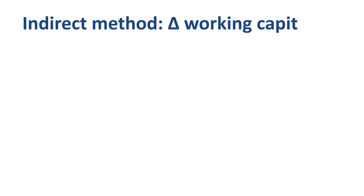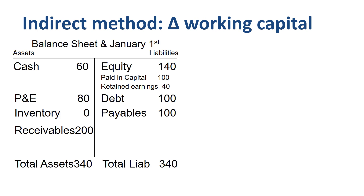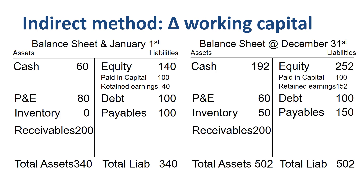The next step in using the indirect method is to review the opening balance sheet of the year versus the closing balance sheet of the year. More specifically, you calculate the deltas in working capital — the increases or decreases. If inventory goes up, then cash goes down. This is called a use of cash, of in this case 50.